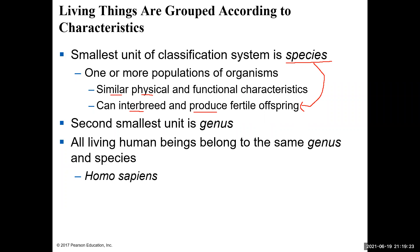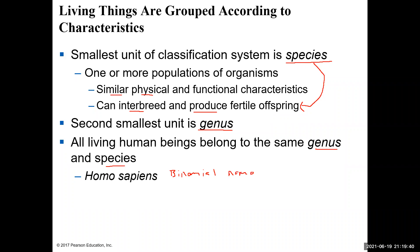The second smallest unit in the classification system is genus. All human beings belong to the same genus and the same species, identified by the binomial name — the genus name and the species name together.